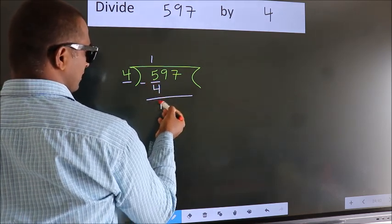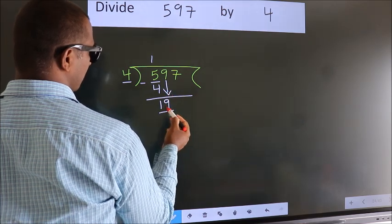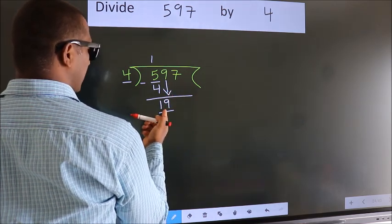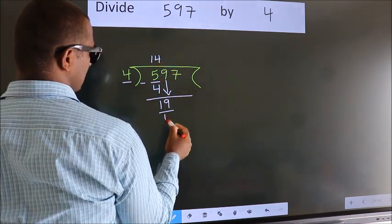After this, bring down the beside number. So 9 down, so 19. A number close to 19 in the 4 table is 4 fours 16.